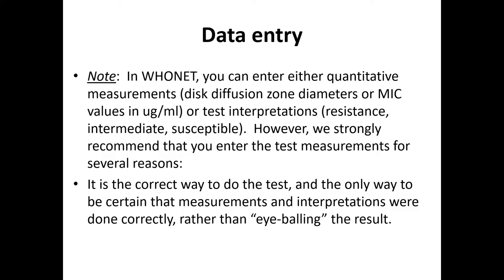If bacteria is highly resistant or very sensitive you'll probably get the correct result — anything below 10 is resistant, anything above 25 is sensitive. But in between, say 14 to 25, it could be resistant, intermediate, or sensitive depending on the organism, antibiotic, and even the year because breakpoints can change. Please measure. There are sick people at the other end of this plate.